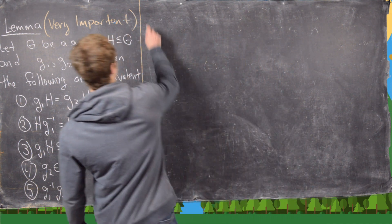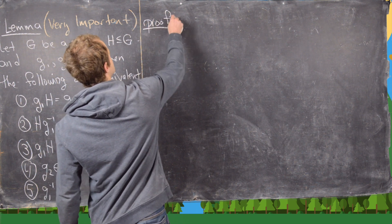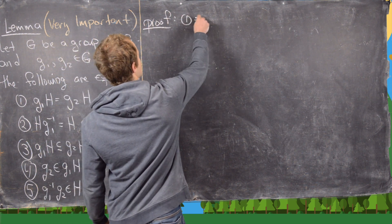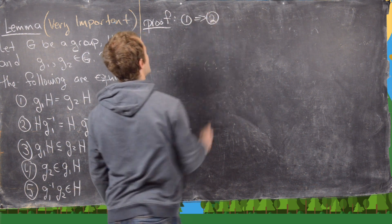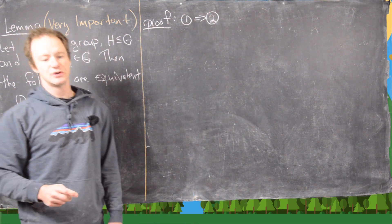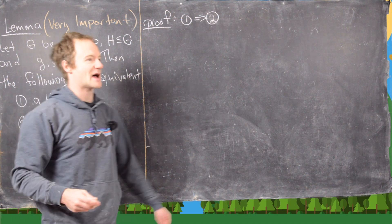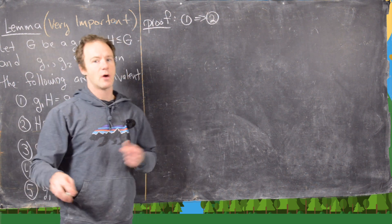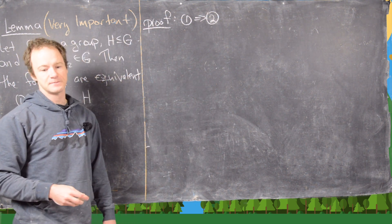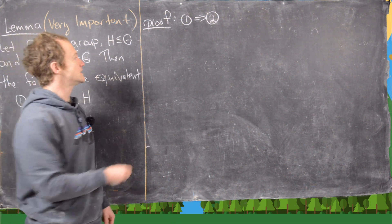So let's look at the proof. We're going to do this in a circle method — we'll do one to two, two to three, three to four, four to five, and then five back to one. We might leave some of those off as exercises.